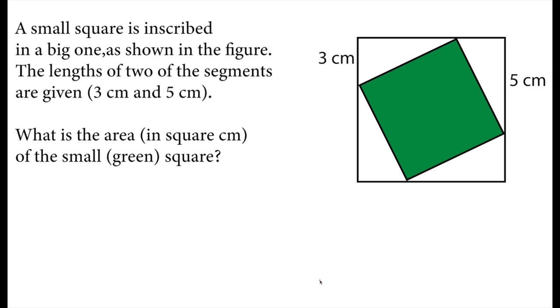A small square is inscribed in a big one as shown in the figure. The lengths of two of the segments are given: 3 cm and 5 cm. What is the area in square centimeters of the small green square?